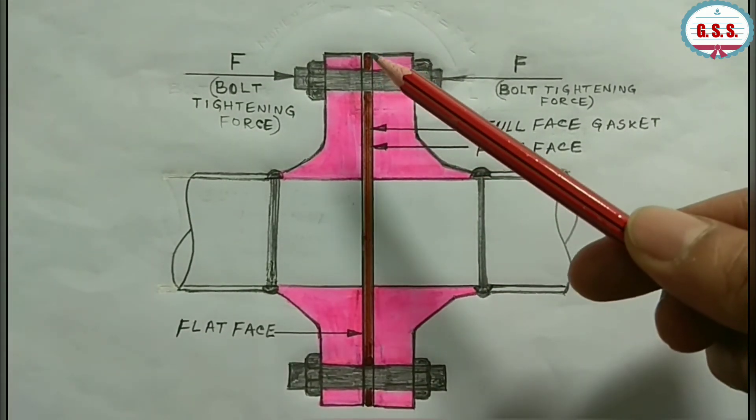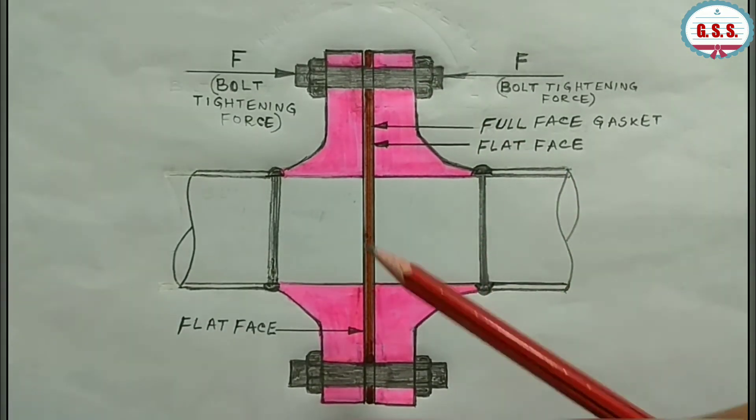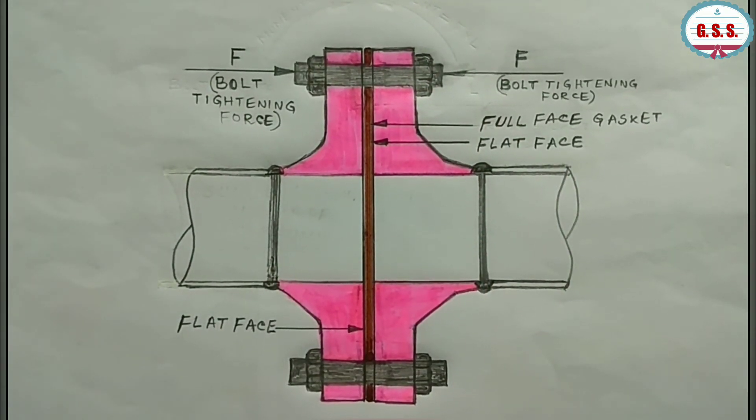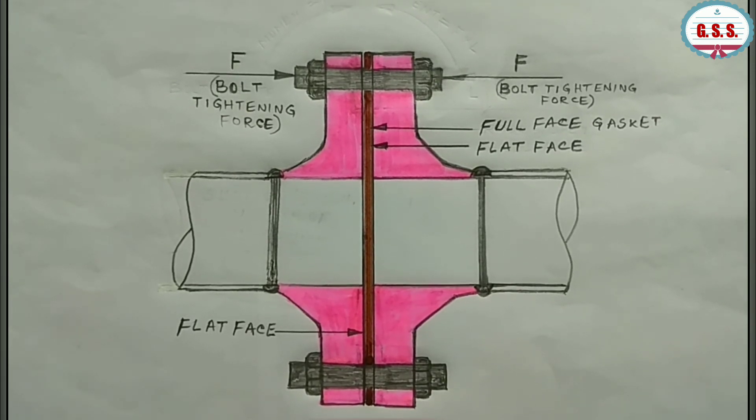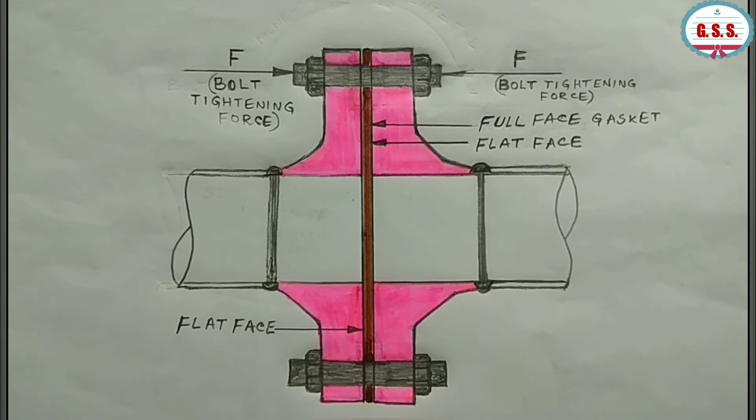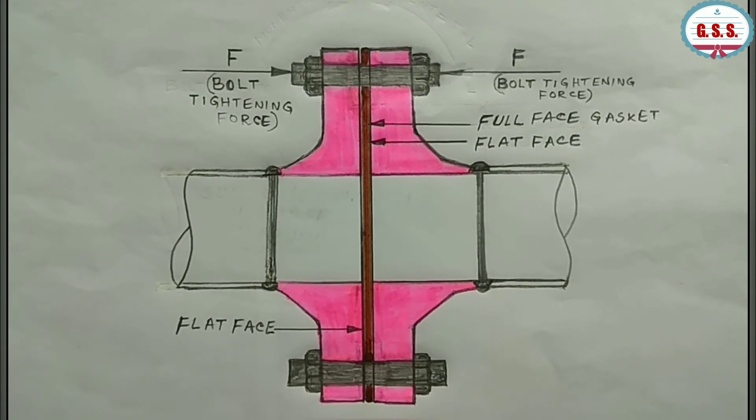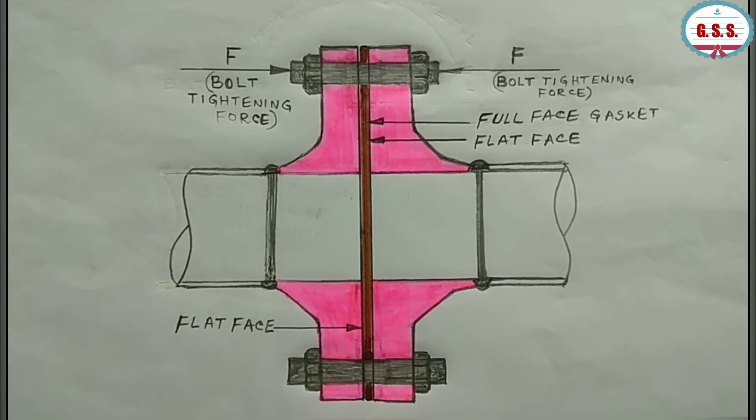Flat face flange is normally used where the connection has a flat face, like cast iron flanged valves which have flat face, and cast iron centrifugal pumps which also have suction and discharge nozzles with flat face.